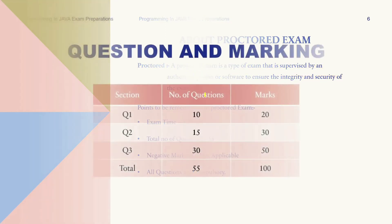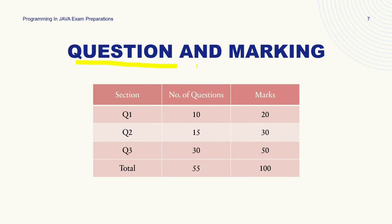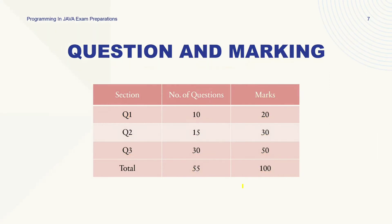Let's look at the questions and marking scheme. The exam is divided into three sections. Section 1 has 10 questions worth 20 marks in total. Section 2 has 15 questions worth 30 marks in total. Section 3 has 30 questions worth 50 marks in total. All questions are compulsory and there is no negative marking for incorrect answers, so make sure to attempt all questions to maximize your score.